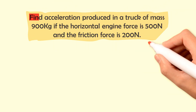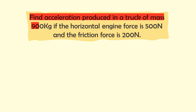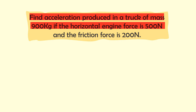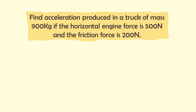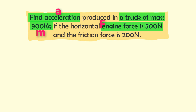The fourth problem: find the acceleration produced in a truck of mass 900 kg if the horizontal engine force is 500 newtons and the friction force is 200 newtons. We identify the variables: find acceleration A; mass M is 900 kg; engine force F is 500 newtons; and friction force f is 200 newtons.